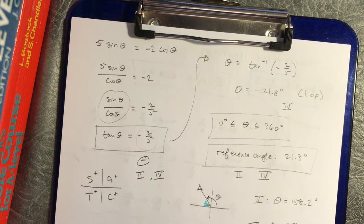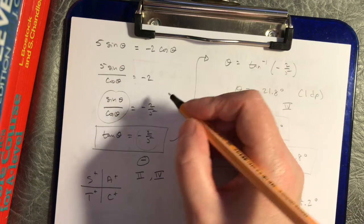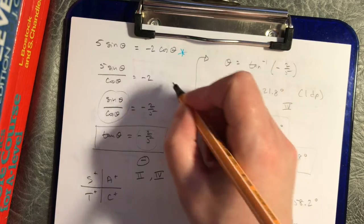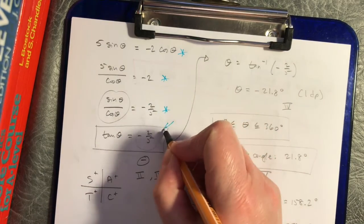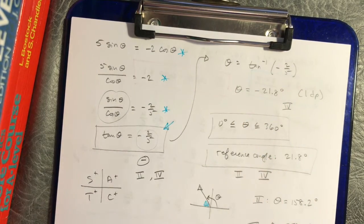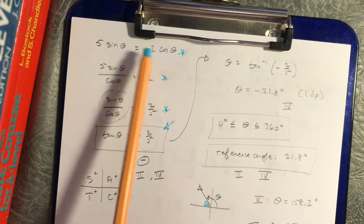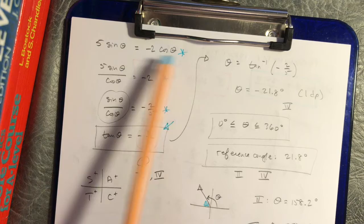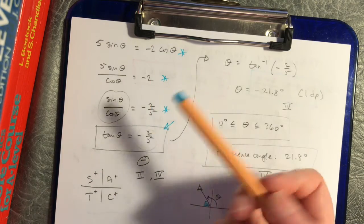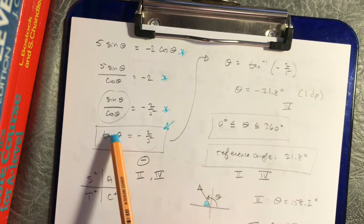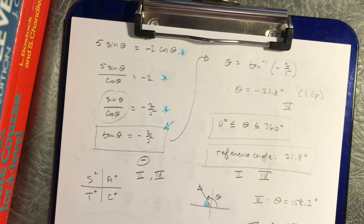The big deal there was taking the equation into a tangent situation. If you've got plain sines and plain cosines at the same angle, a good thing to try is: can you divide through to get tangent equals some number? That's the first identity applied.